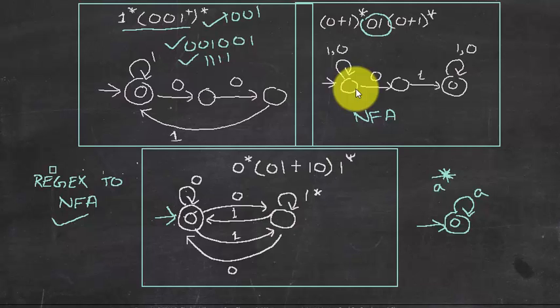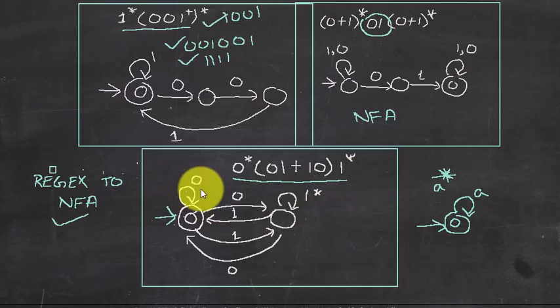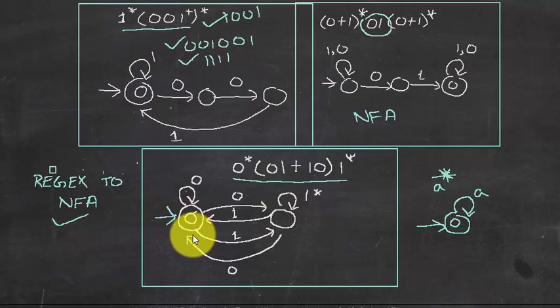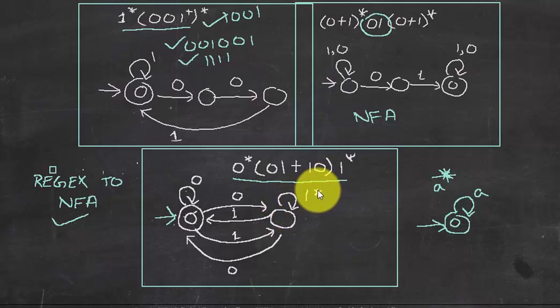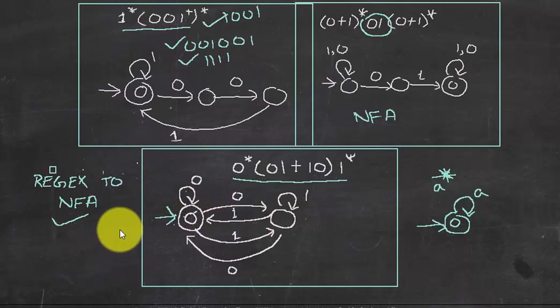The next expression is 0*(01 | 10)1*. It is accepted with 01 or 10 in the middle, with zero or more 0s before and one or more 1s after. In the NFA, 0* keeps you in the same state; then you take the 01 or 10 branch; then 1* is optional and allows zero or more 1s at the end.